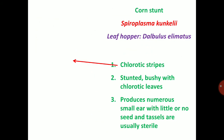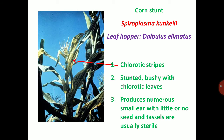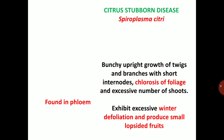First of all, corn stunt disease caused by Spiroplasma kunkelii, mainly transmitted through leafhopper Dalbulus elimatus. Three important symptoms: chlorotic stripes, stunted bushy plants with chlorotic leaves, and they produce numerous small ears with little or no seed; tassels are usually sterile. It will produce sterile plants — one of the important diseases in corn.